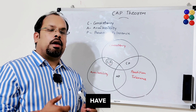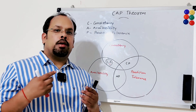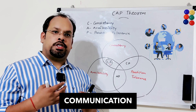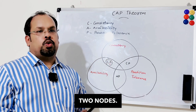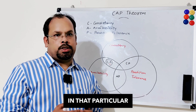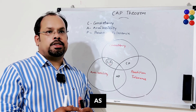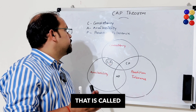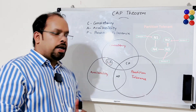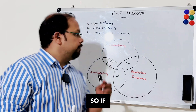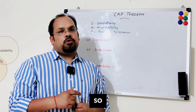Partition tolerance: if we have a distributed system that means we have multiple nodes or servers, and maybe the communication channel can break between two nodes. In that particular scenario, the system should work as expected. That is called partition tolerance.